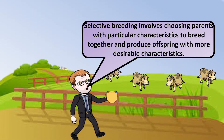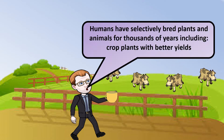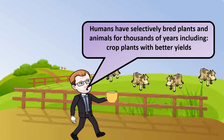Selective breeding involves choosing parents with particular characteristics to breed together to produce offspring with more desirable characteristics. Humans have been selectively breeding plants and animals for thousands of years to improve things like crop yields, to make cows that produce more milk, and to make desirable plants.